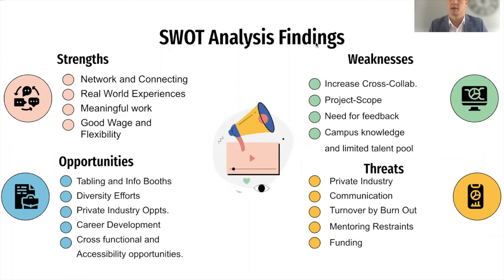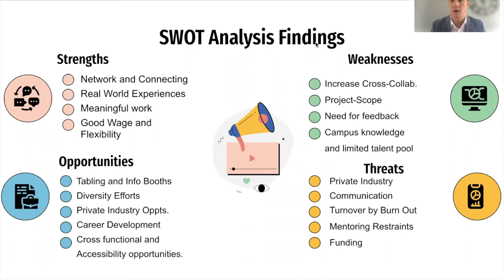Now I'm going to dive into the SWOT analysis findings. I'll touch on the main points — those that were redundant across all groups, whether students, supervisors, or leadership. For more in-depth detail, refer to the handout sent through Marissa Reed's email. Starting with strengths: we found that the CAI does a great job with networking and connecting everybody — students to leadership, supervisors to leadership. It connects people and helps them gain experience and learn new things from colleagues. It also offers real-world experiences that can help students go into the workplace, whether as a stepping stone for the next job or opportunity.